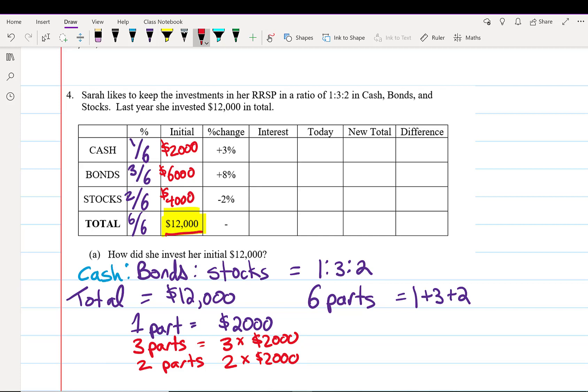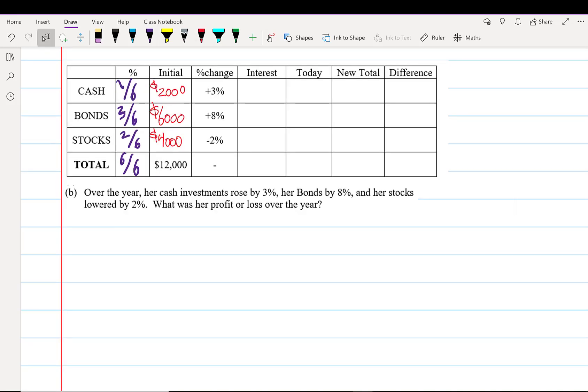Over the year, her cash investments rose by 3%, her bonds by 8%, and her stocks lowered by 2% (that means she lost money). What was her profit or loss over the year?